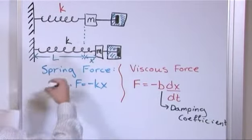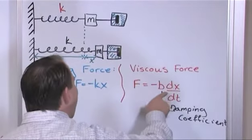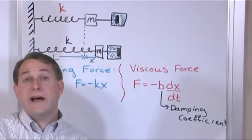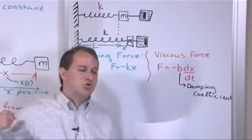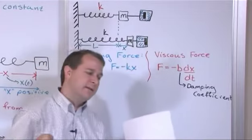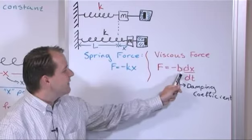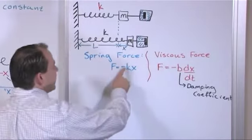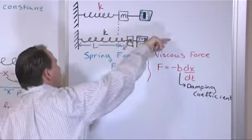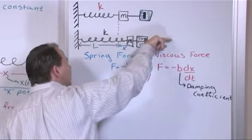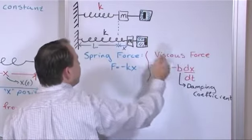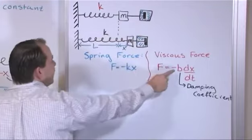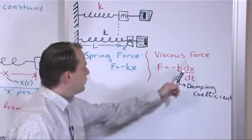This viscous force is not proportional to position x like the spring force — it's proportional to how fast the block is moving through the liquid, which is dx/dt, the velocity. That makes physical sense: push slowly through oil and there's little resistance; ram through fast and there's much greater opposing force. It has a negative sign for the same reason as the spring force: the damping force always opposes the direction of motion.